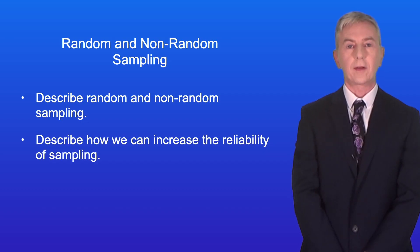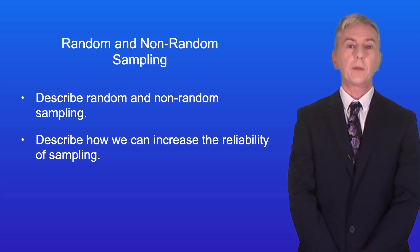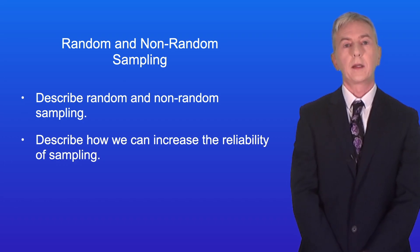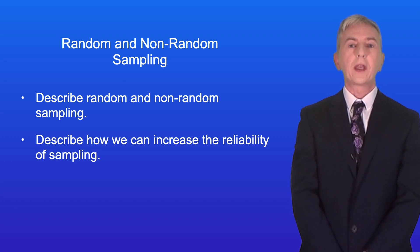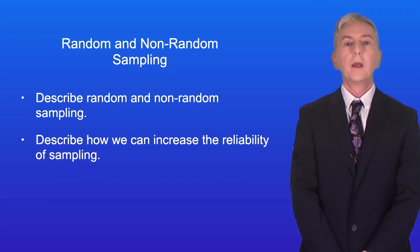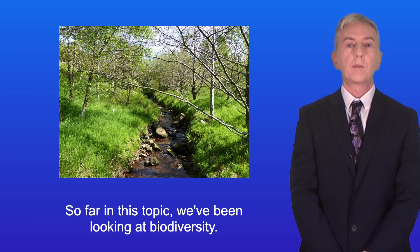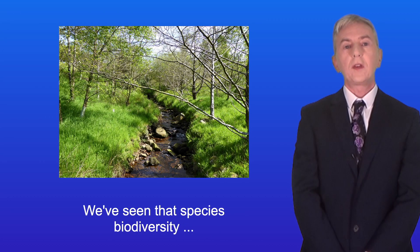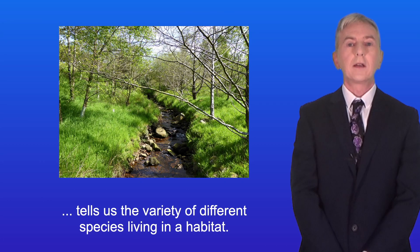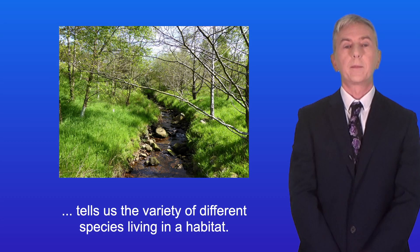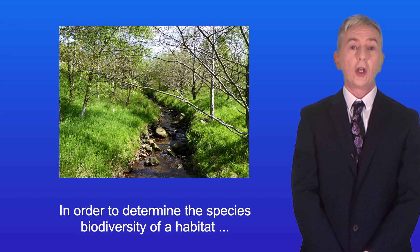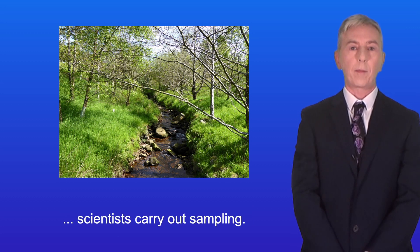Hi and welcome back to Free Science Lessons. By the end of this video you should be able to describe random and non-random sampling. You should then be able to describe how we can increase the reliability of sampling. So far on this topic we've been looking at biodiversity. We've seen that species biodiversity tells us the variety of different species living in a habitat. In order to determine the species biodiversity of a habitat, scientists carry out sampling.